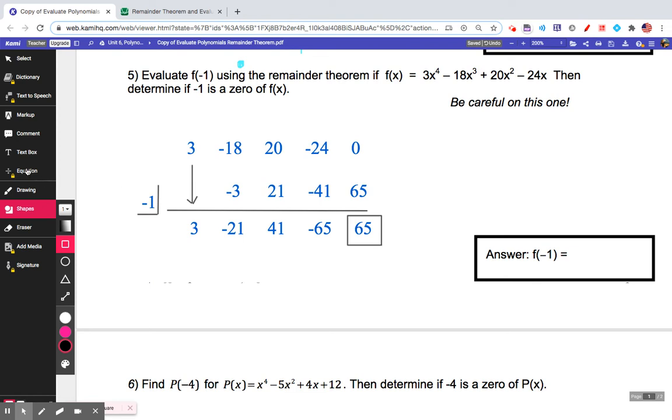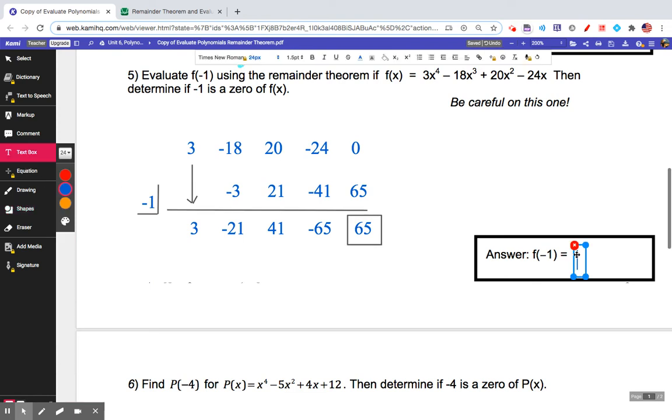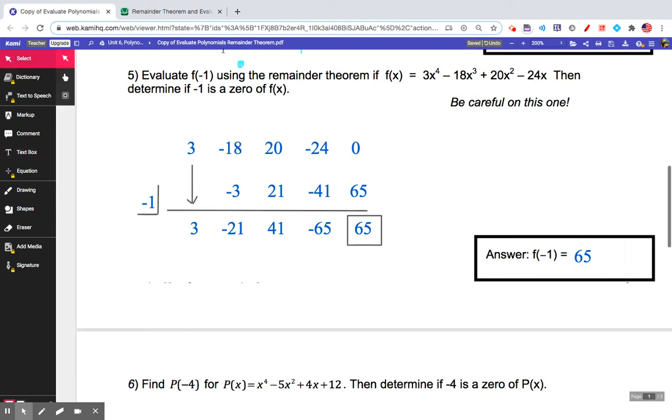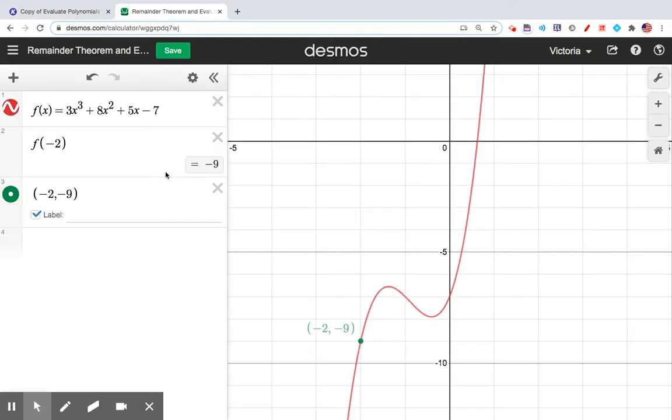Because that's my remainder, I now know that f(-1), according to the remainder theorem, the value - it says the remainder of the function when dividing by -1 is the value of the function at that point. So I believe if I were to type this thing into Desmos, f(-1) would be 65. I'm just going to go ahead and check it.